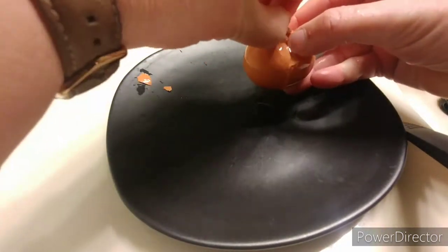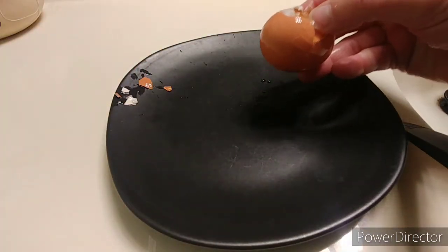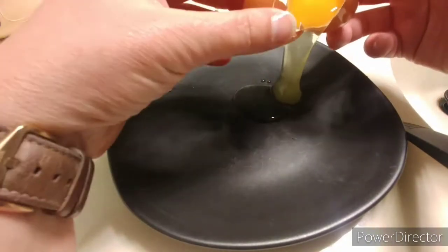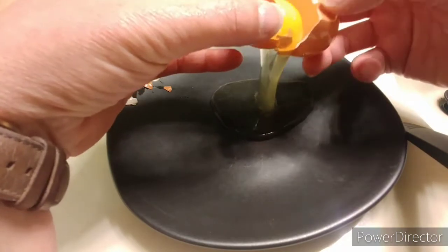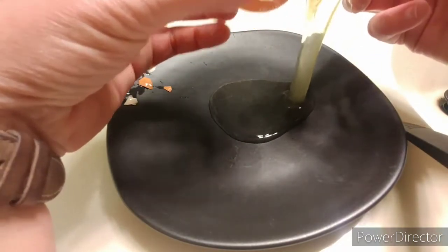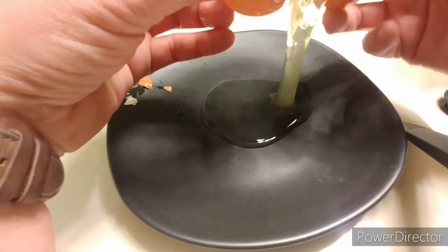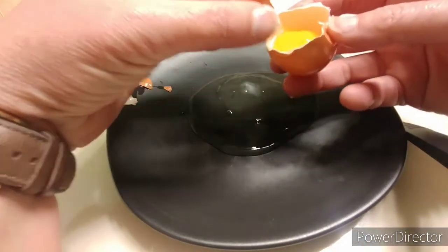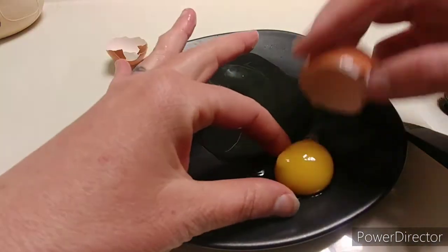And we're going to see if we can separate the yolk from the albumin. Look, the yolk has a membrane too. It'll stay intact until we break it.